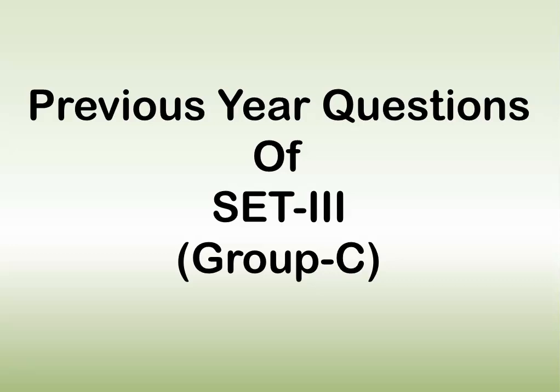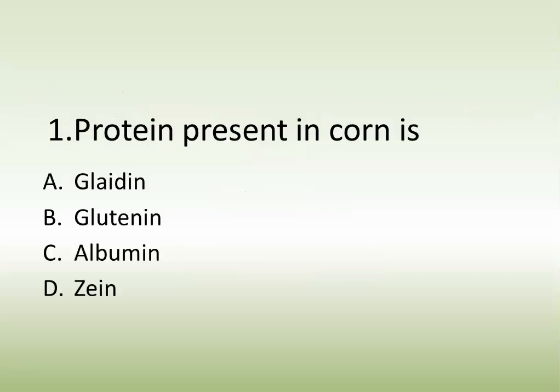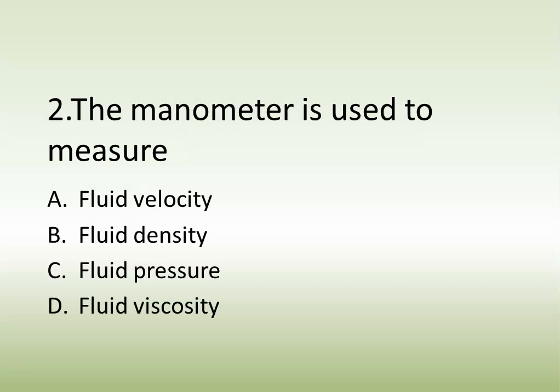Question number one: protein present in corn. Options are: gliding, glutamine, albumin, or zein. The answer is zein. Question number two: the manometer is used to measure. Options are: fluid velocity, fluid density, fluid pressure, or fluid viscosity. The answer is fluid pressure.